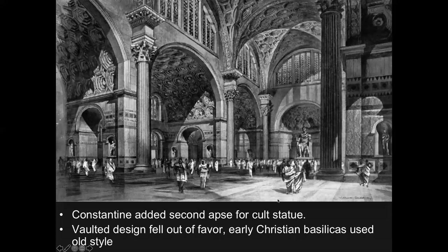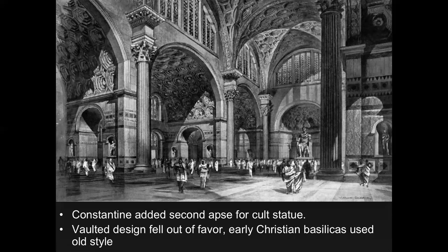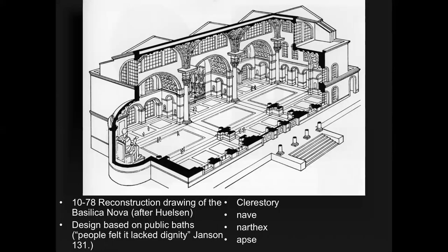Constantine added a second space for his cult statue, so if he converted to Christianity, he wasn't fully converted. This kind of vaulted design, which is very expensive, fell out of favor. With the early Christian basilicas, once Christianity became legal, they used things more like what you would see in Roman cities. Most of the famous cities you think of in Europe — London, Paris are the greatest examples — were originally Roman cities, founded as capitals to rule over local people and later becoming large international megalopolises.